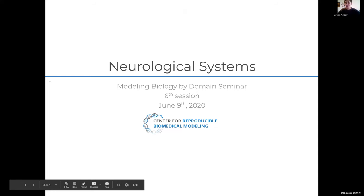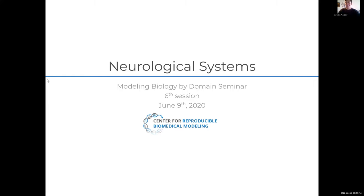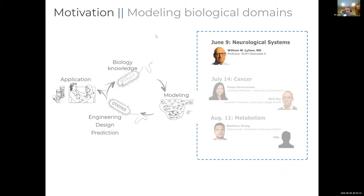Hello everyone and welcome to our sixth session in the Modeling Biology by Domain seminar series. Today we're going to be covering neurological systems. We've been exploring how to model different biological domains, building from single-scale domains such as protein signaling, metabolism, or gene expression, and then slowly building up to multi-scale systems such as cardiac tissue, whole-cell modeling, and neurological systems, which we'll be covering today.